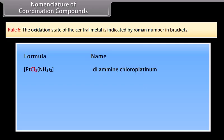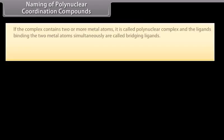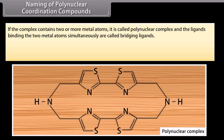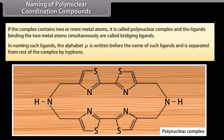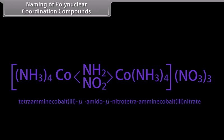Rule 6: The oxidation state of the central metal is indicated by a Roman numeral in brackets. Naming of Polynuclear Coordination Compounds: If the complex contains two or more metal atoms, it is called a polynuclear complex; the ligands binding two metal atoms simultaneously are called bridging ligands. In naming such ligands, the prefix μ (mu) is written before the name of the ligand and is separated from the rest of the complex by hyphens. For example, one such compound is named as tetraaminecobalt(3)-μ-amido-μ-nitro-tetraaminecobalt(3) nitrate.